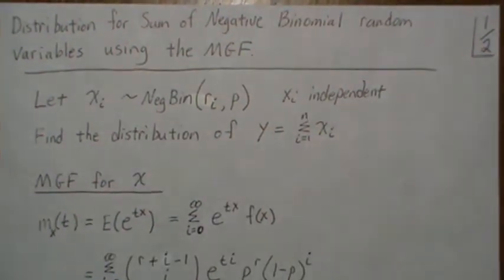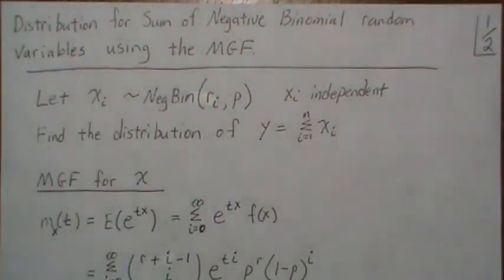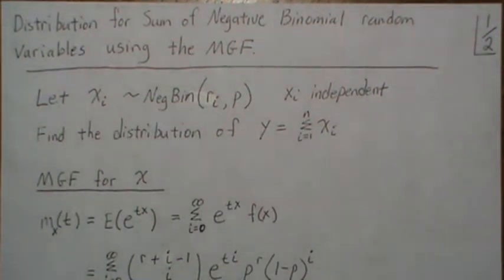Hello, in this video we're going to find the distribution for a sum of negative binomial random variables using the moment generating function technique.